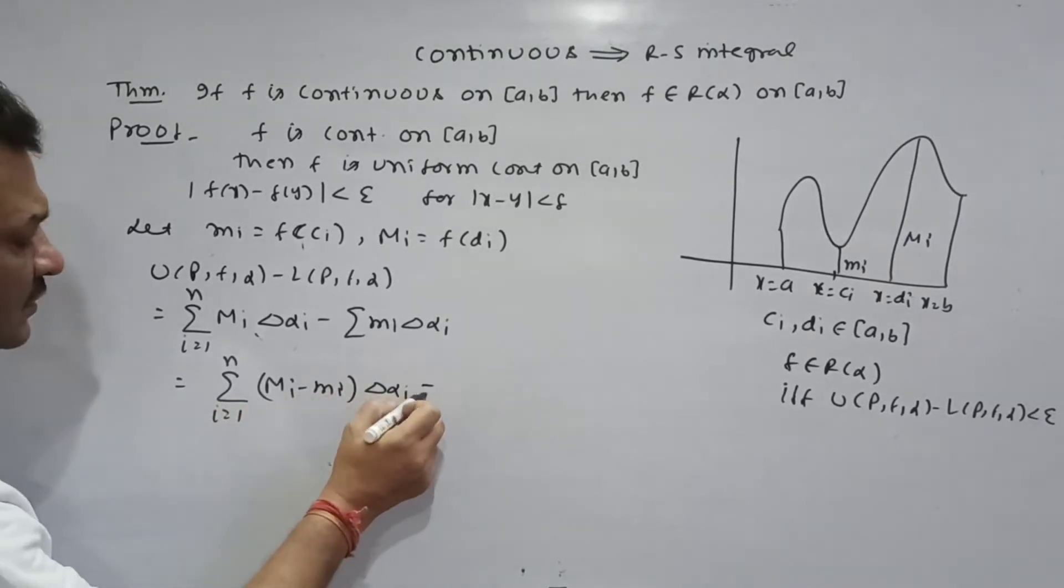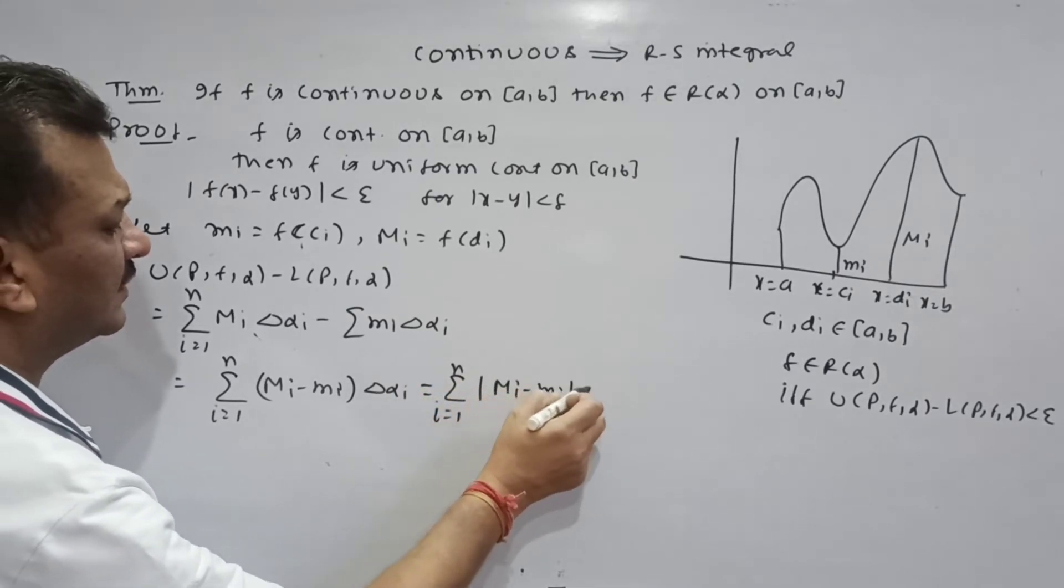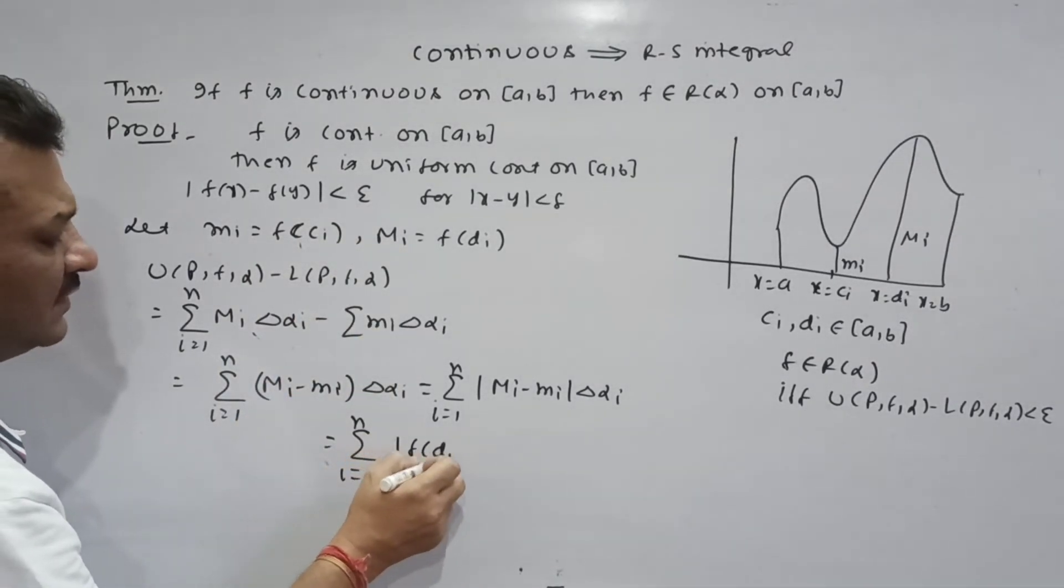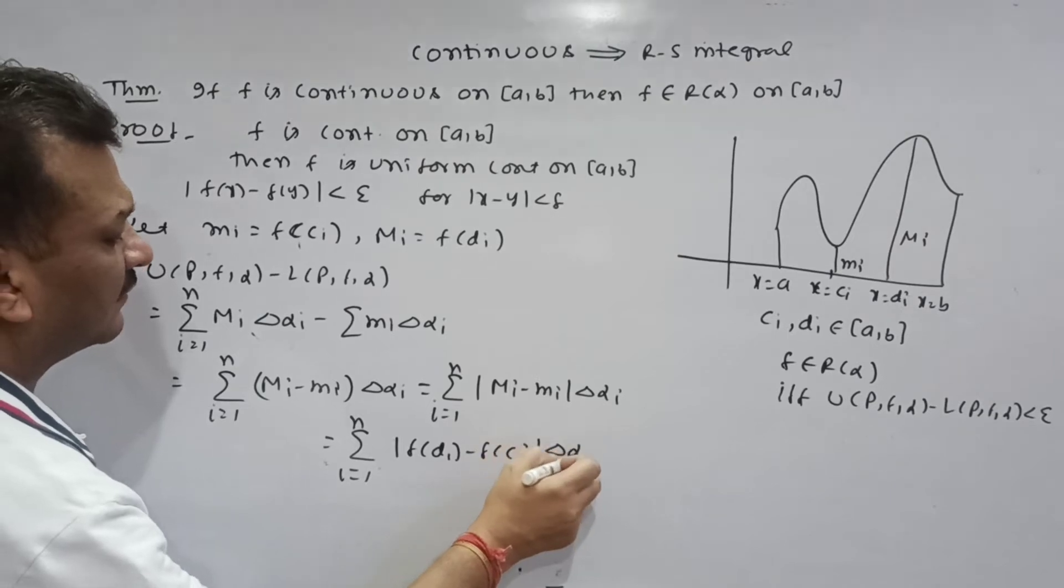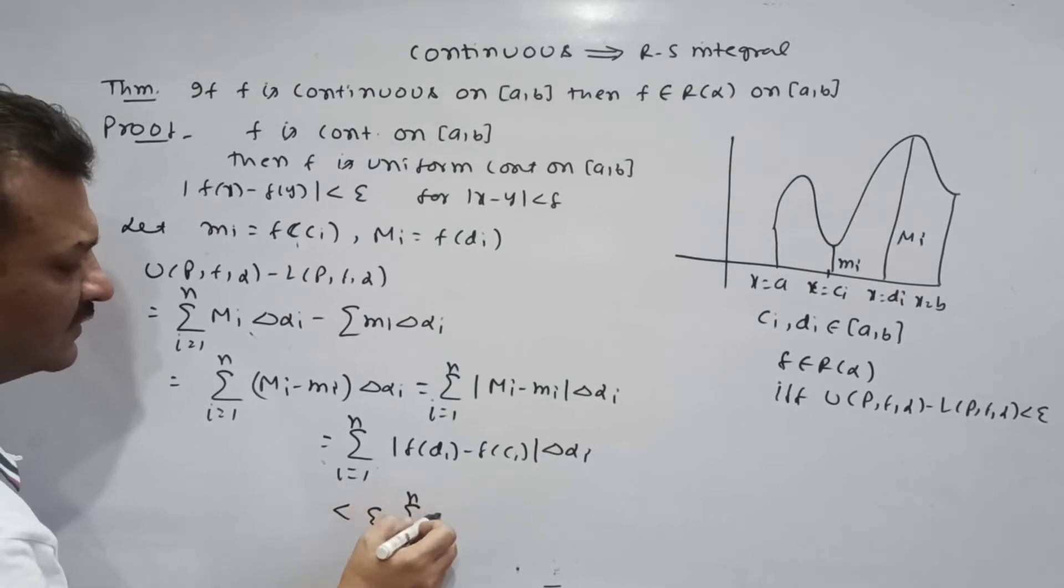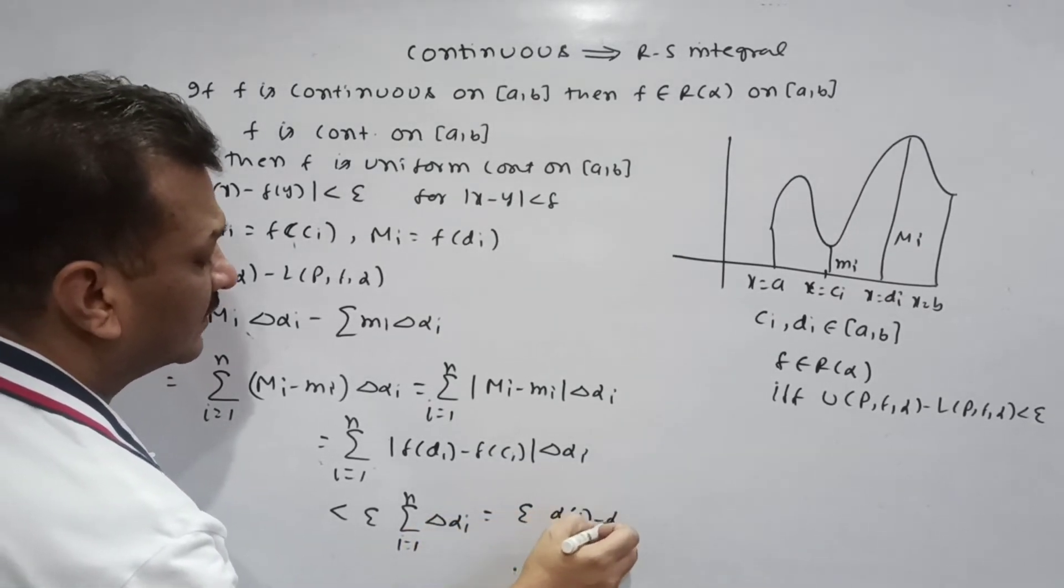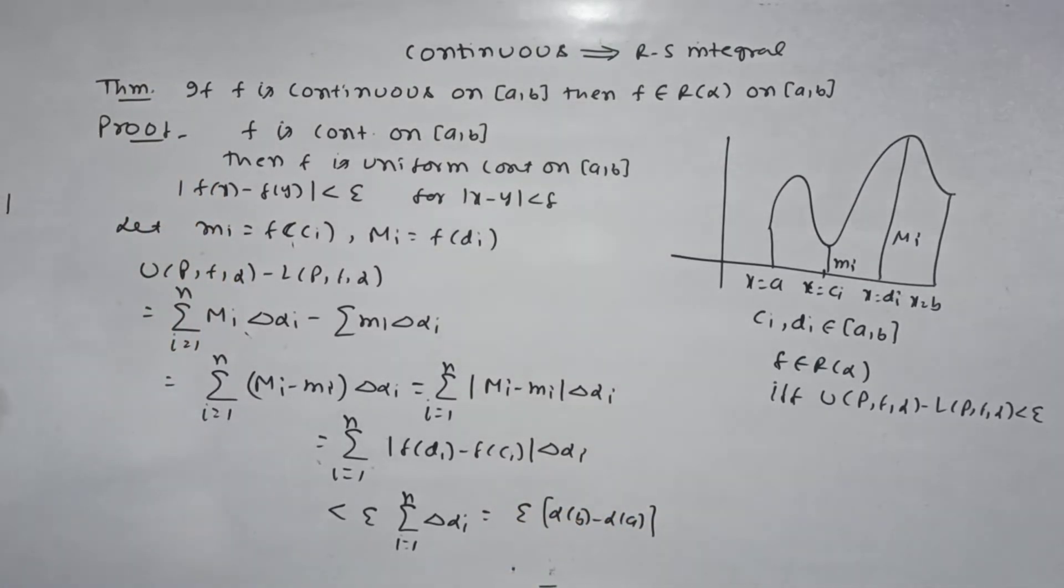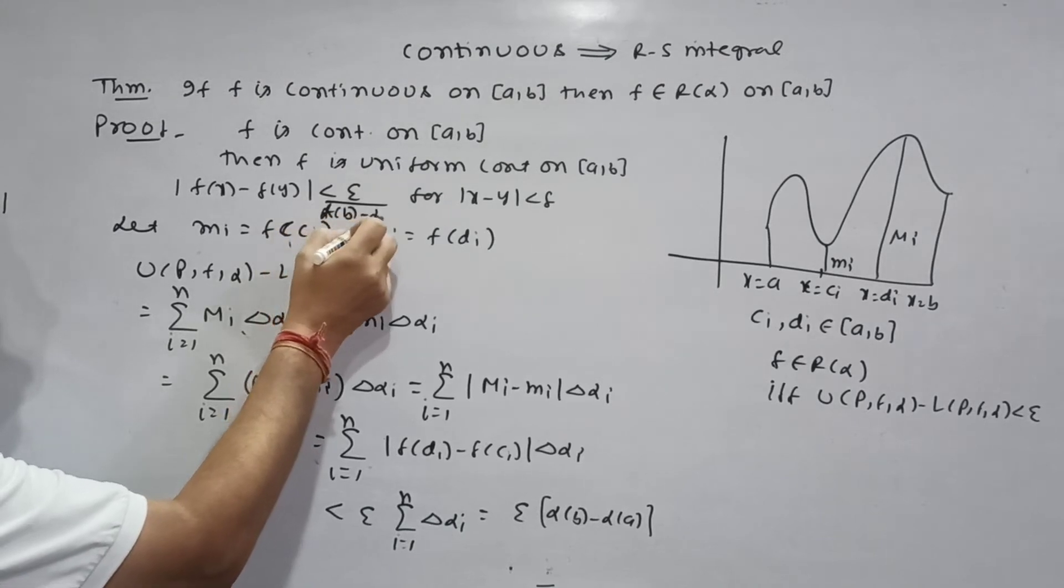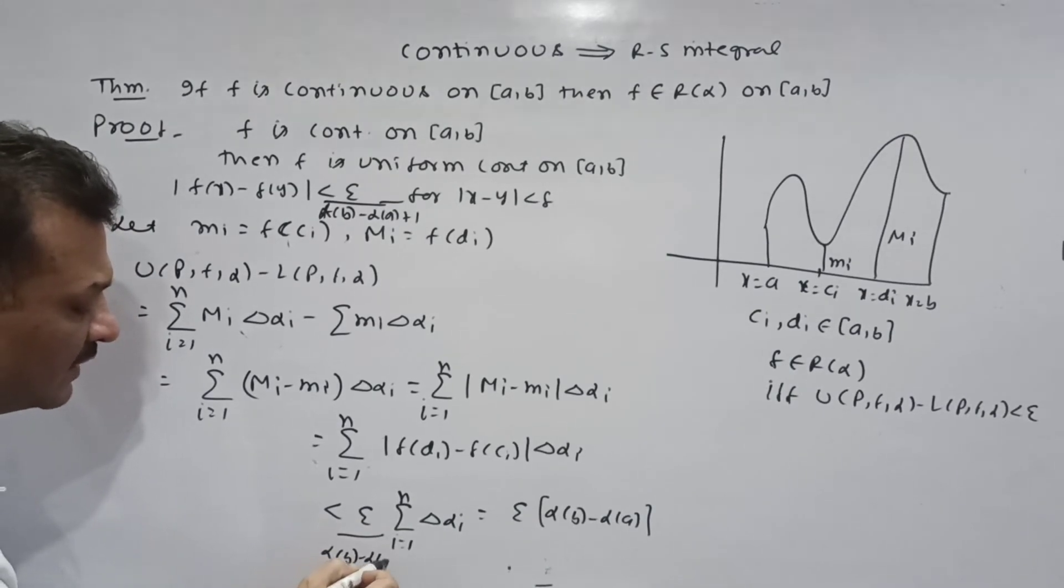Summation i equals 1 to n (Mi minus mi) delta phi equals summation i equals 1 to n f(di) minus f(ci) delta phi. According to definition of uniform continuous, this one is less than epsilon summation i equals 1 to n delta phi. Delta phi equals alpha b minus alpha a.